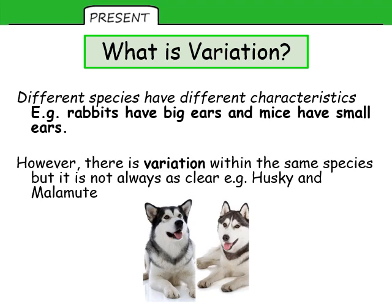Within the same species we also get variation, even if it's not always as clear. Dogs are one species and yet there are massive differences within them. For example, comparing an Irish Wolfhound and a Chihuahua — they are very different and show a lot of variation despite both being dogs. But variation isn't always obvious: here at the bottom I have a Husky on the left and a Malamute on the right.